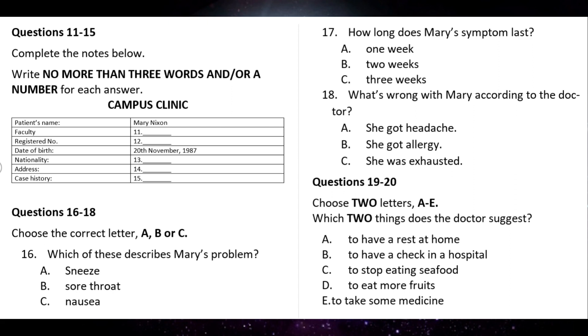Good afternoon, Doctor. May I come in? Yes. Come in. I'm a freshman in the university and I don't feel very good. OK. Sit down, please. I need to record some basic details about you first. Fine. What's your full name? Mary Nixon. Is your surname spelt N-I-X-O-N? That's right. Well, Mary, what's your major? I'm studying art. Good choice. Tell me your registered number.